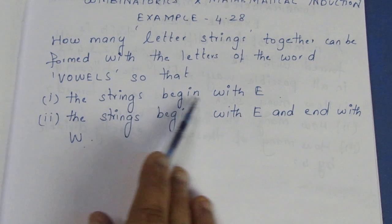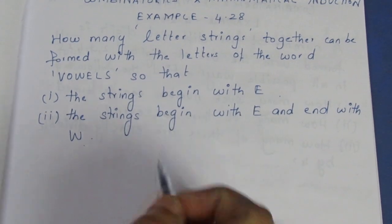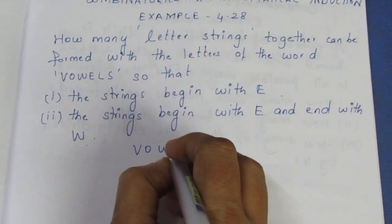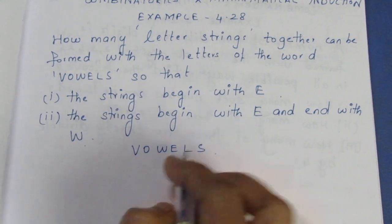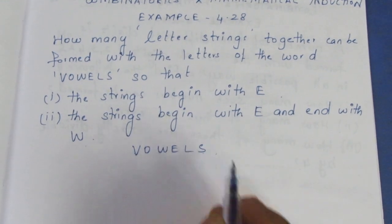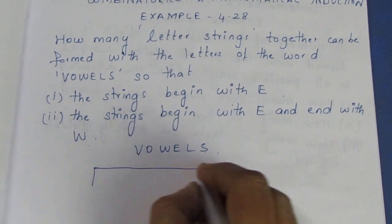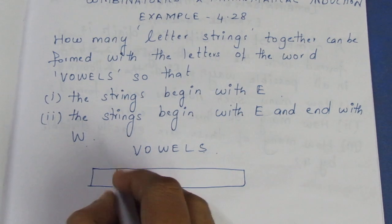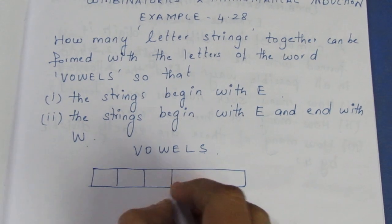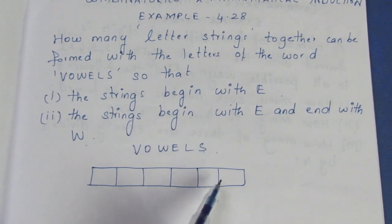In the first condition, we form a string using the letters. Let's count the letters: 1, 2, 3, 4, 5, 6 — so VOWELS has 6 letters. That means we put 6 boxes.